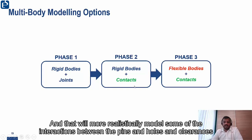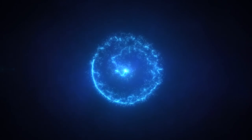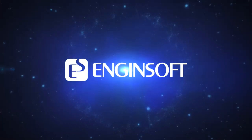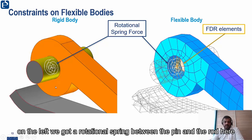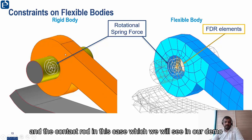This will more realistically model some of the interactions between pins and holes and clearances. We're displaying the difference between how constraints are modelled in rigid and flexible bodies. On the left we've got a rotational spring between the pin and the rod — the contact rod in this case — which we'll see in our demo.